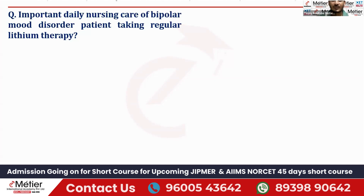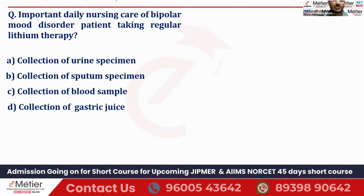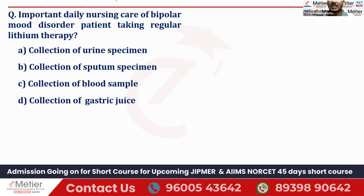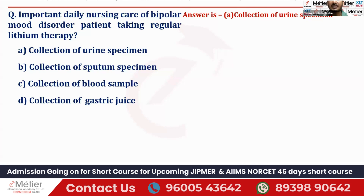Let's see the options. Four options are given here, and as a nurse we need to focus on which one. The options are: collection of urine specimen, collection of sputum specimen, collection of blood sample, and collection of gastric juice. Any guessings? The right answer is option A, that is collection of urine specimen.